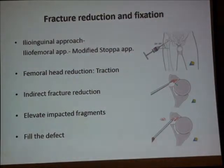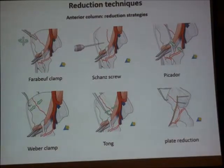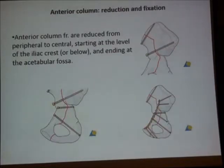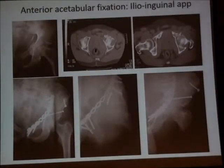The same techniques mentioned for the anterior wall are applied here. We add tricks for reduction using the Schanz screw as a joystick technique and reduction clamps to manipulate the whole anterior column. A pointed reduction clamp can approximate fragments; pull them together, then apply plate fixation after achieving reduction. In anterior column fractures, lag screws are possible — there is a long, wide surface area and a long fracture line — allowing multiple lag screw fixation, with a neutralization plate according to the fracture pattern.